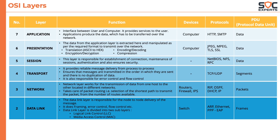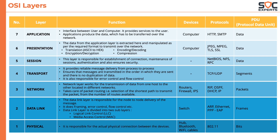Then we have layer 1 — the physical layer — which is responsible for the actual physical connection between devices. Things like hubs, Bluetooth, and Wi-Fi cables work here. Protocols include 802.11, and the data is in the form of bits.